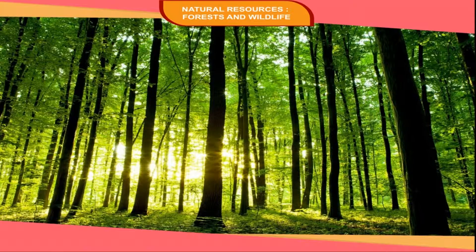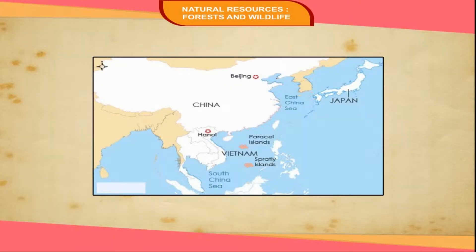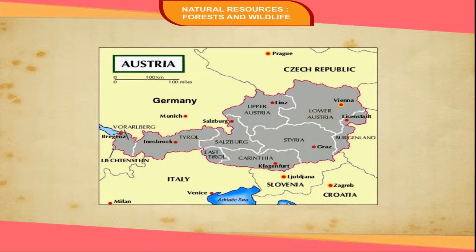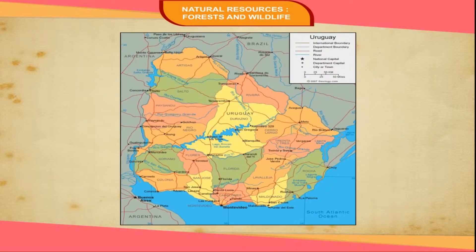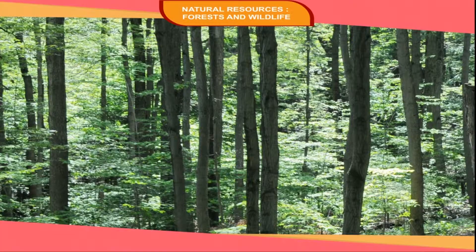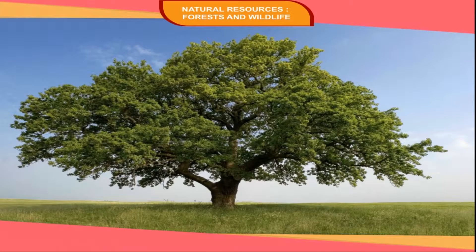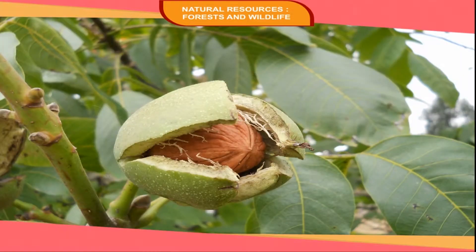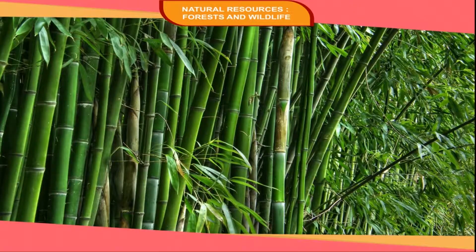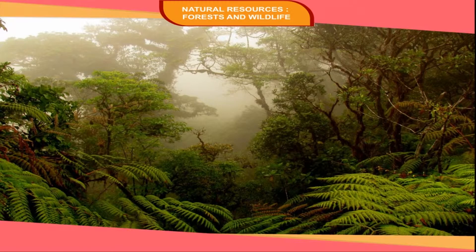Temperate Evergreen Forests are of mixed variety. They are found in warm temperate lands of South China and Japan, Eastern Africa, Southeast Australia, Southeast Brazil, Uruguay, and Southeast USA. The timber from these forests is very valuable. Oak, pine, mulberry, walnut, camphor, and bamboo are the main species of plants found in such places. High summer temperature and heavy rain favor temperate evergreen forests.